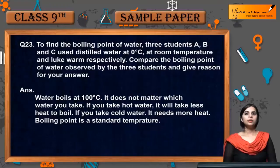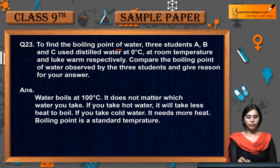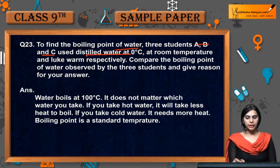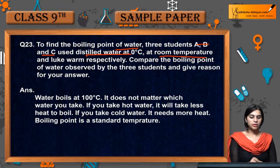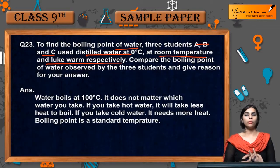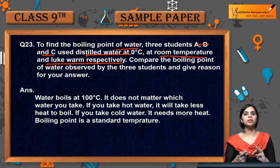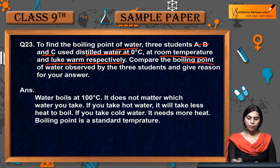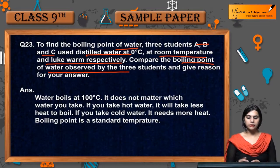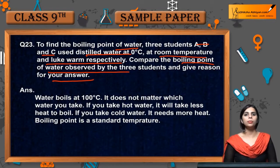Question number 23: to find the boiling point of water, three students A, B, and C used distilled water at different temperatures — A at zero degrees, B at room temperature, and C with lukewarm water. Lukewarm water is neither warm nor cold. Compare the boiling point of water observed by the three students and give a reason for your answer.